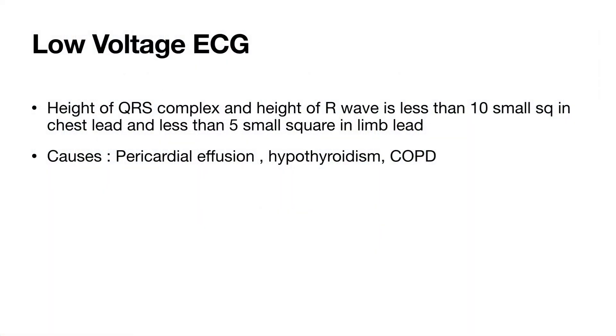Moving further, on basic ECG, we have two more topics to discuss. Low voltage ECG. We know it is called low voltage ECG if height of QRS complex or height of R wave in chest lead is less than 10 small squares and in limb lead less than 5 small squares in normal standardization. Causes of low voltage ECG are pericardial effusion, hypothyroidism, chronic obstructive pulmonary disease, etc.